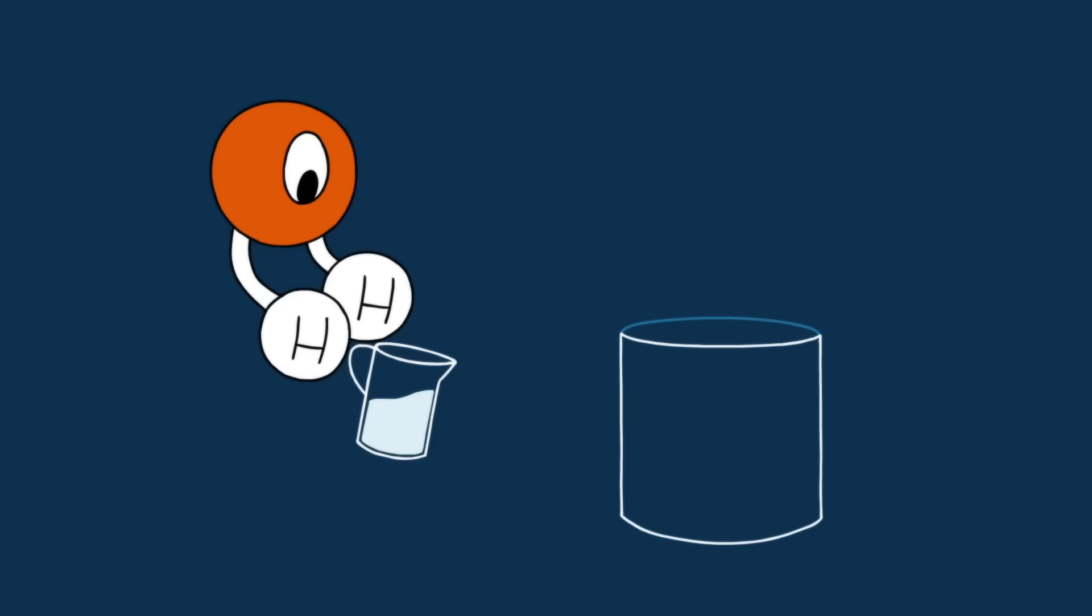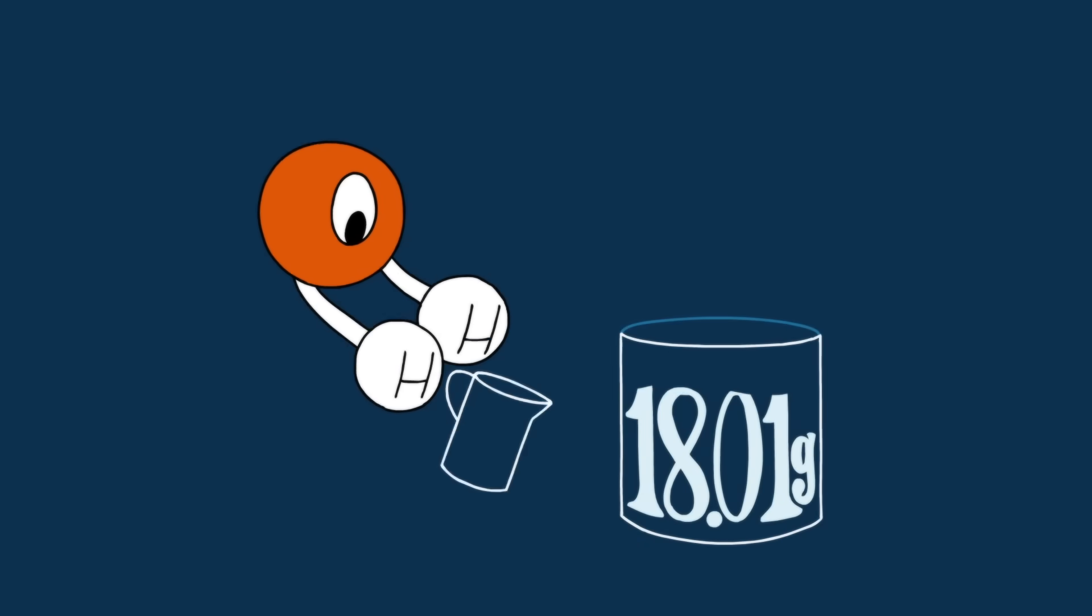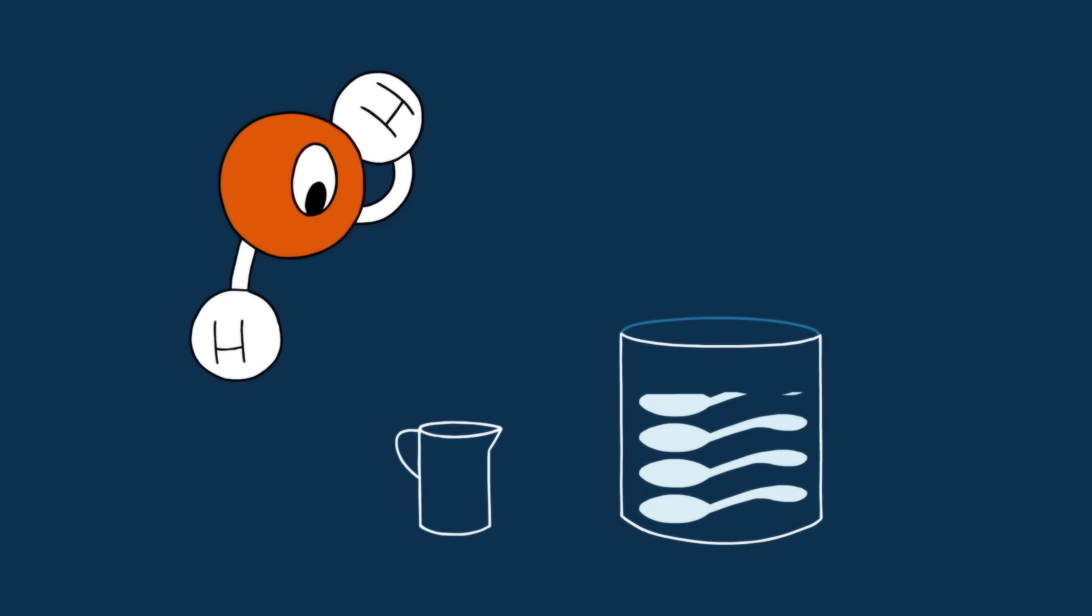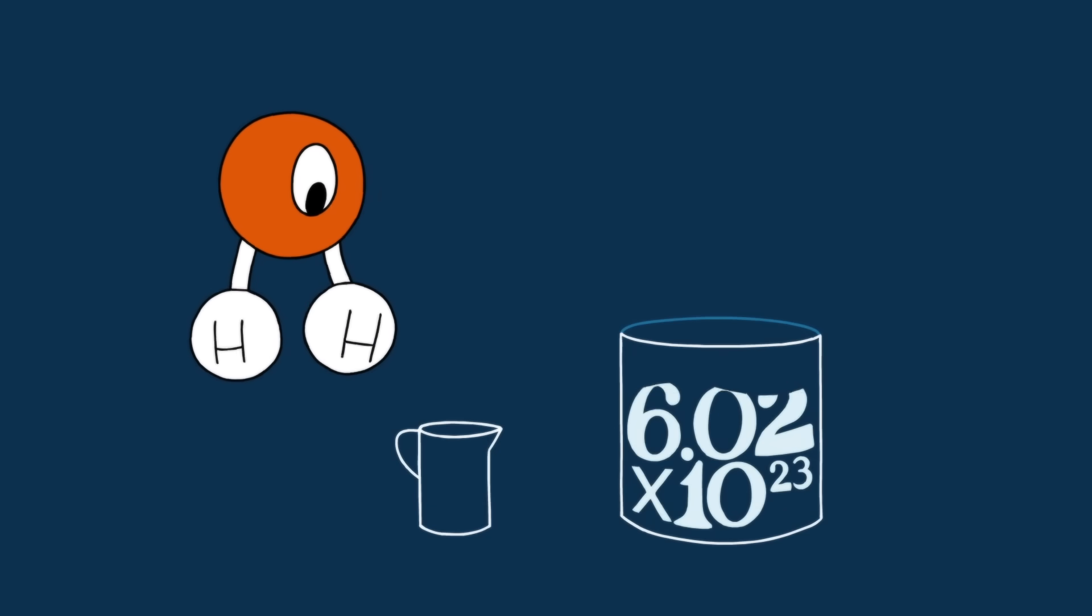Instead, think of water molecules. If you pour 18.01 grams of water into a glass, which is 18.01 milliliters, which is like 3.5 teaspoons of water, you'll have 602 sextillion molecules of water.